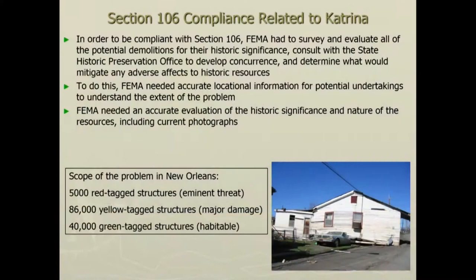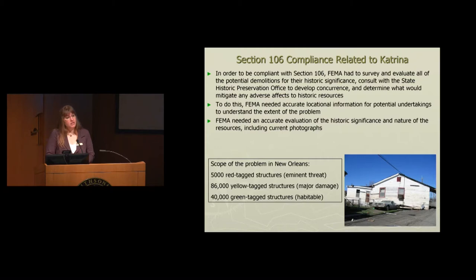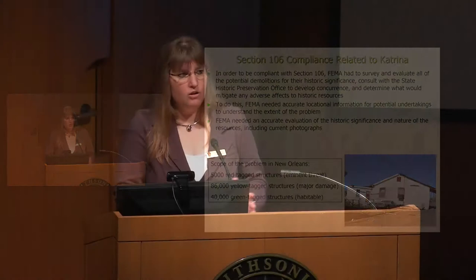To be compliant with Section 106, they had to go out, survey, and evaluate all of those potential demolitions or any undertaking the government might go through. They had to consult with the State Historic Preservation Office to develop some kind of agreement as to whether any of those resources are historic, are potentially eligible for the National Register, and determine if there is going to be an adverse effect and what they need to do to mitigate it. They needed accurate locational information for any of those potential undertakings, and needed to understand the extent of the problem across three states.